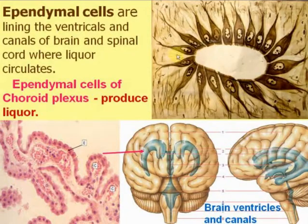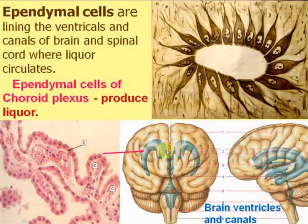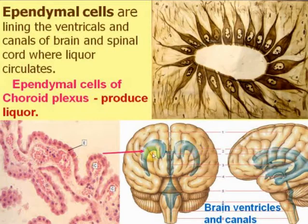Ependymal cells line the ventricles and canals of the brain and spinal cord, where cerebrospinal fluid (liquor) circulates. In this picture you see brain ventricles and canals shown in blue where the liquor circulates — about 150 milliliters in the human brain.